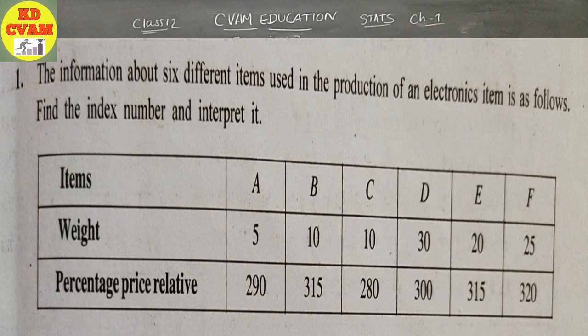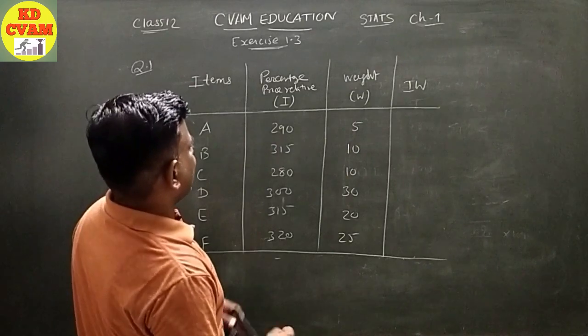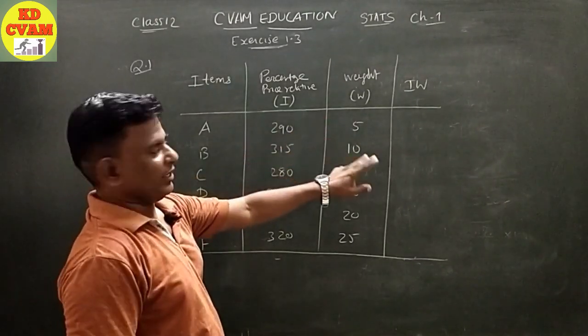Question number 1: Information about six different items used in the production of an electronics item is as follows. Find the index number and interpret it. Items are A, B, C, D, E, F with weights 5, 10, 10, 30, 20, 25 and percentage price relatives 290, 315, 280, 300, 315, and 320.